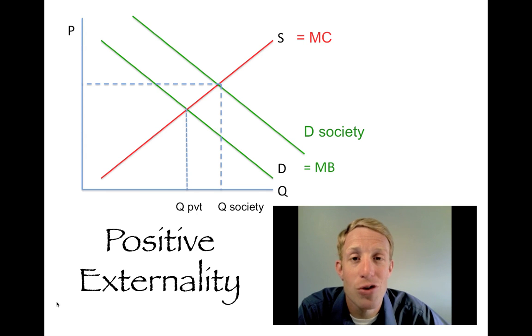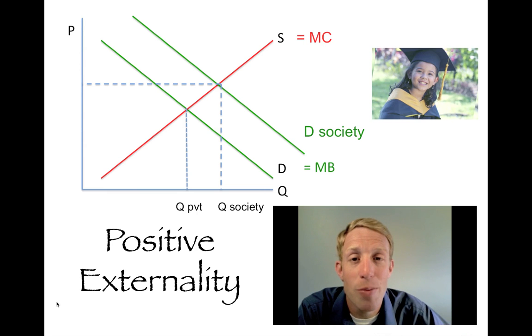An example of a good that produces a positive externality would be something like education. Even though you may not be involved in producing the education of a public school, you may be retired, you may be in the workforce, and you're not engaged in the public school system, there are benefits to society from having an educated workforce, an educated population, people who know how to read and write and who can understand the civics of a country. And so there's a positive externality created by having more people educated.